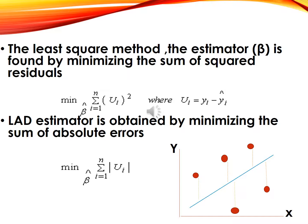In the LAD estimate, we minimize the sum of absolute errors, which is the difference between the actual observation and the linear regression line. We take the absolute value because points above the line give a positive difference and points below give a negative difference. We consider only the absolute value. This is given by minimizing the summation of |ui|, where ui is yi minus y-hat.